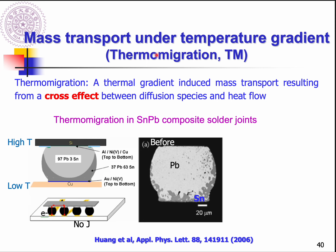So what is thermal migration? It only happens as a mass transport under a temperature gradient — meaning the temperature gradient induces this mass transport. In the beginning, to demonstrate whether thermal migration exists, scientists prepared a specific experimental setting.